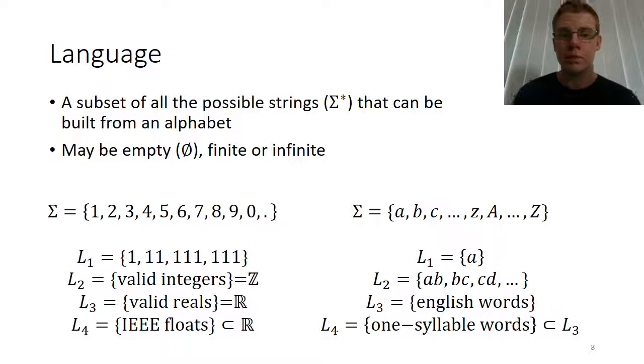So now we get into the most important concept in this course: languages. A language is just a subset of the possible strings that can be built from an alphabet. So we talked before about what we meant by sigma Kleene star as the set of all possible strings. A language is just any subset of that, including sigma star, that is a language itself. The language may be empty, which we represent using the empty set symbol. It may be finite in size, so it may only have a finite number of strings, or it may be infinite, like sigma star was, where there's an infinite number of finite length strings.